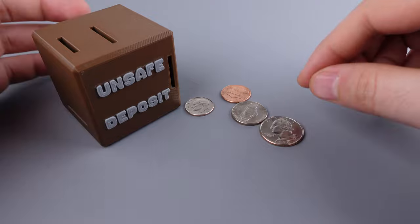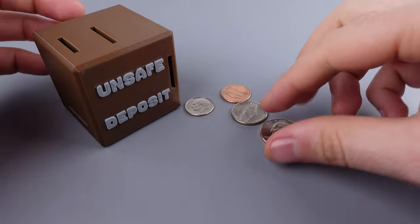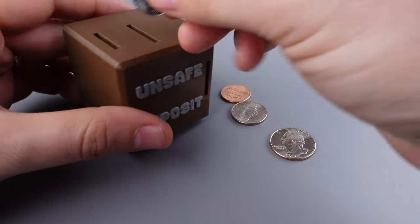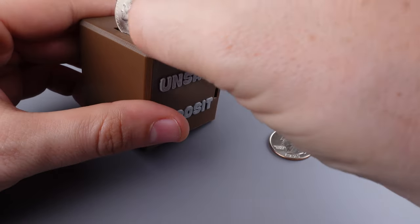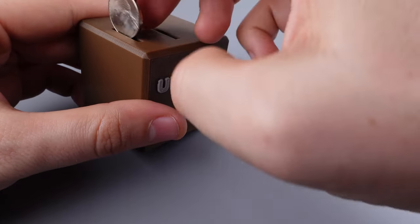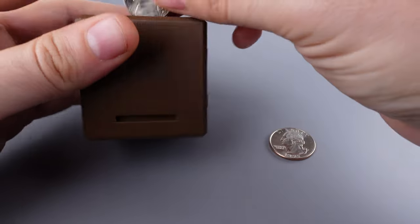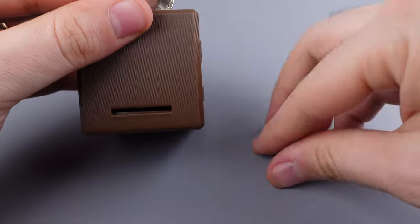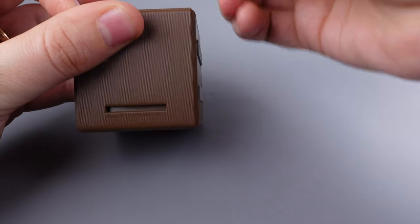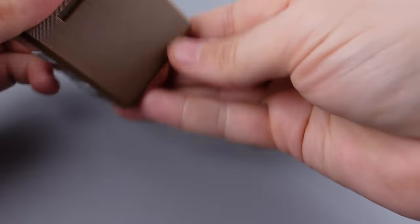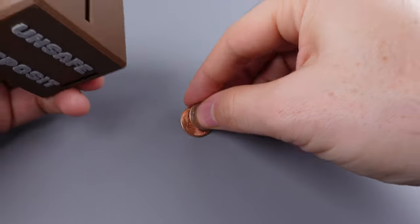To reassemble the puzzle we just reverse the steps. I'll go through this quickly. We'll take the dime, the penny, and the nickel. We'll open the trap door and put the quarter back in. Close the trap door. Remove the penny and the dime.